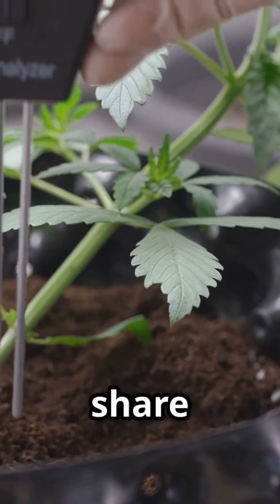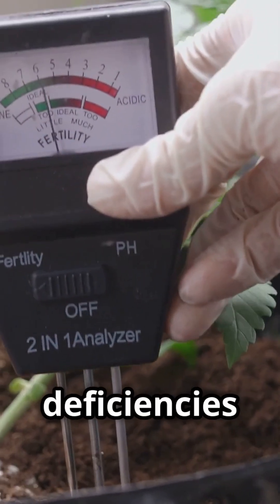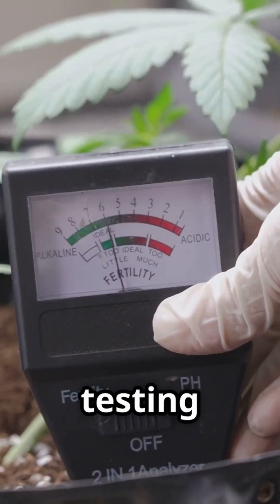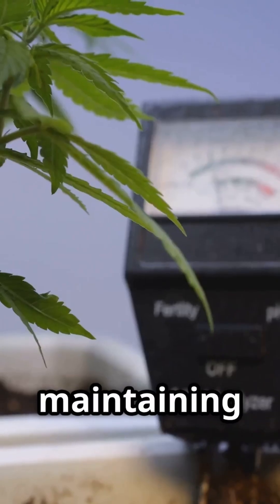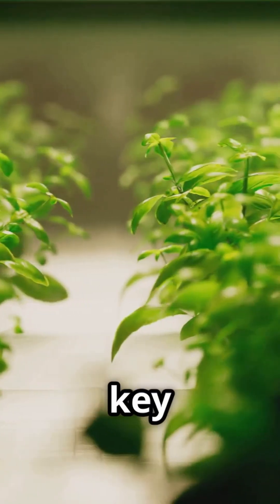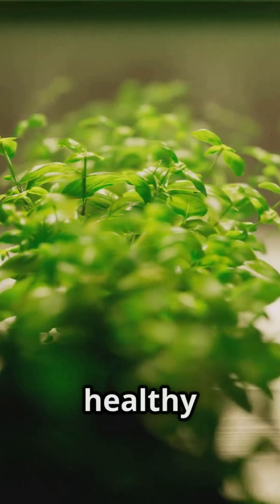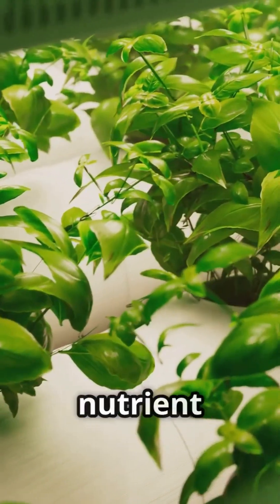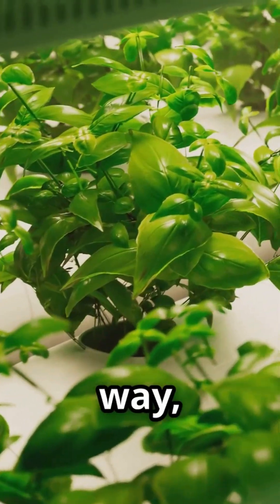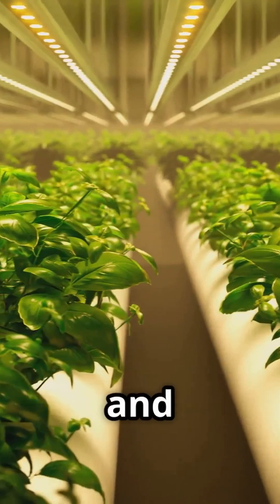Finally, we'll share some preventative measures to help you avoid nutrient deficiencies in the future. Regular testing and monitoring, using high-quality nutrient solutions and maintaining proper pH levels are all key practices that will help you maintain a healthy hydroponic system. By the end of this chapter, you'll be equipped to tackle any nutrient deficiency issues that come your way, ensuring your plants stay healthy and productive.